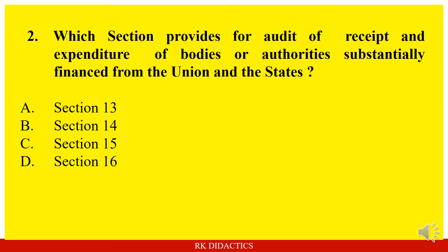Question: Which section provides for audit of receipts and expenditure of bodies or authorities substantially financed from the union and the states — Section 13, 14, 15 or 16? Answer: Section 14.